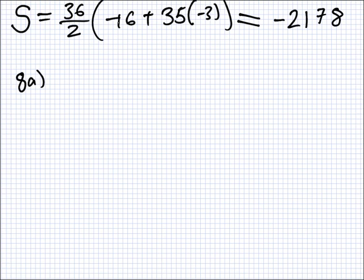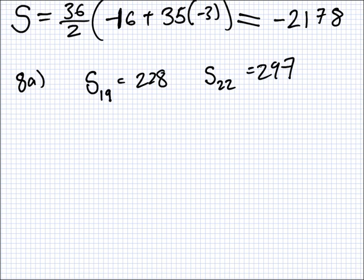8A. Sorry, it's less than 26 or minus 16. Sorry, minus 16. It was 2A. 8A now. The sum of the first 19 and 22 terms are 228 and 297. So, that means S_19 is 228 and S_22 is 297. Is that part okay to begin with? I've just read the question and wrote the information out like this.